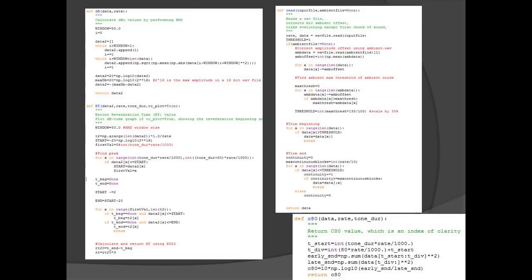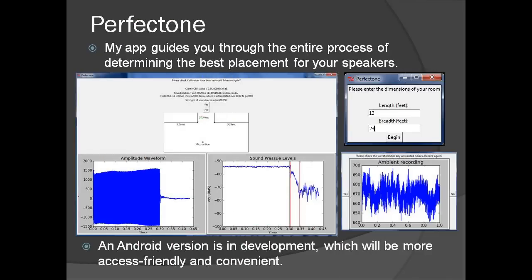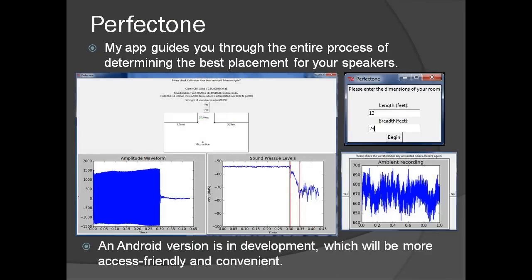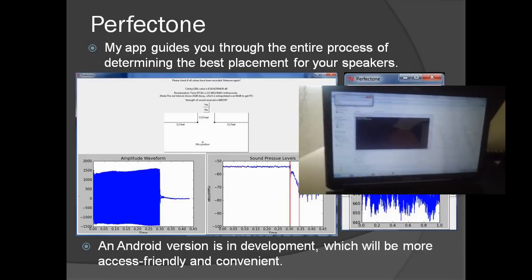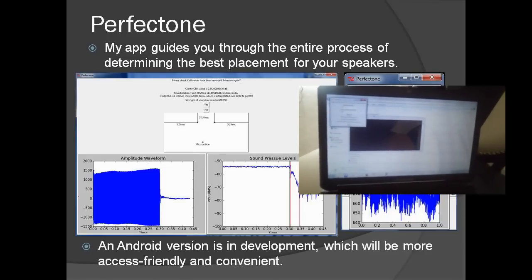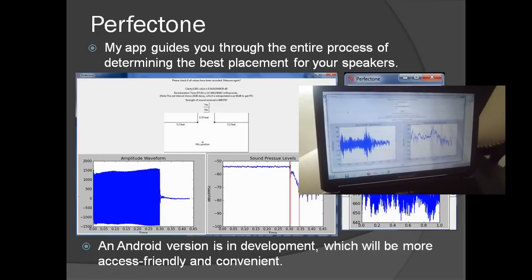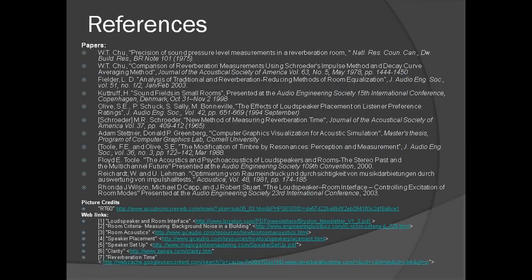The source code and an accompanying library are going to be released soon, but for now you can download and enjoy the final version of the PerfectTone application which guides you through the entire process of determining the best placement for your speakers. A bonus app called Sonorous is also being provided, which was developed in the process. An Android version of PerfectTone is in development.